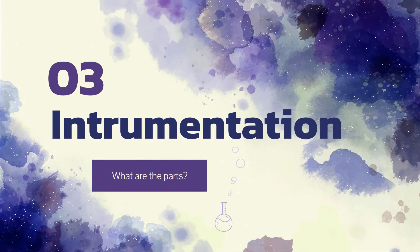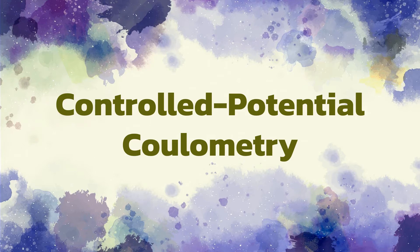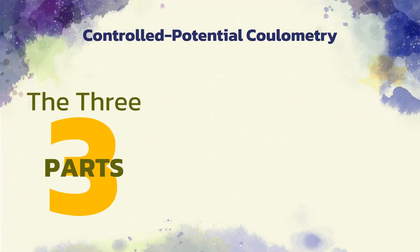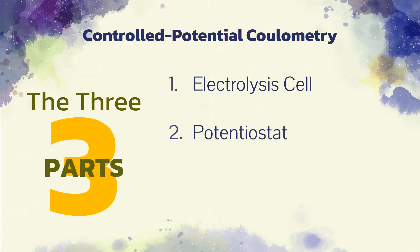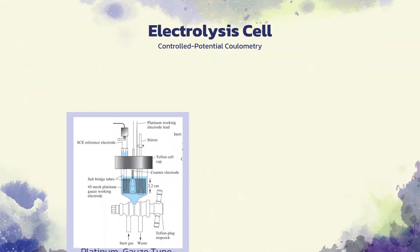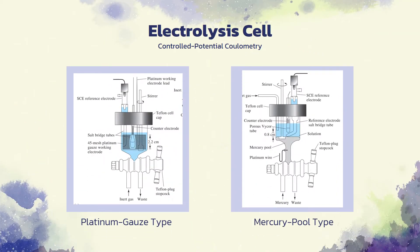Earlier, I have introduced two types of coulometric methods. I will be discussing the instrumentation behind each of those methods. Starting with controlled potential coulometry. The instrumentation for potentiostatic coulometry consists of an electrolysis cell, a potentiostat, and a device for determining the charge consumed by the analyte. These figures illustrate two types of cells that are used for potentiostatic coulometry.